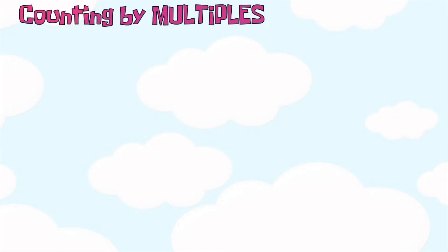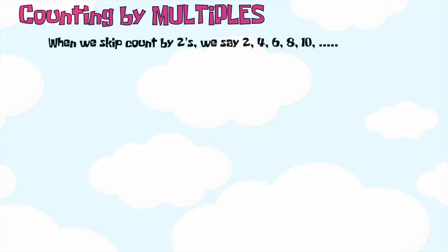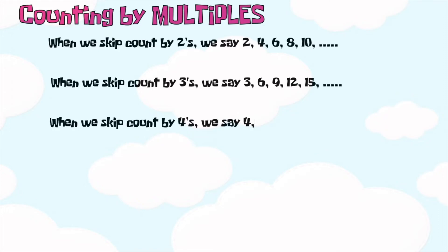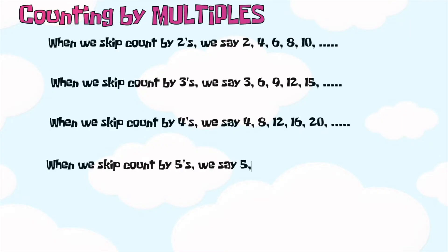There is another way to find the product using counting by multiples. When we skip count by twos, we say two, four, six, eight, ten, and so on. When we skip count by threes, we say three, six, nine, twelve, fifteen, and so on. When we skip count by fours, we say four, eight, twelve, sixteen, twenty, and so on. When we skip count by fives, we say five, ten, fifteen, twenty, twenty-five, and so on.